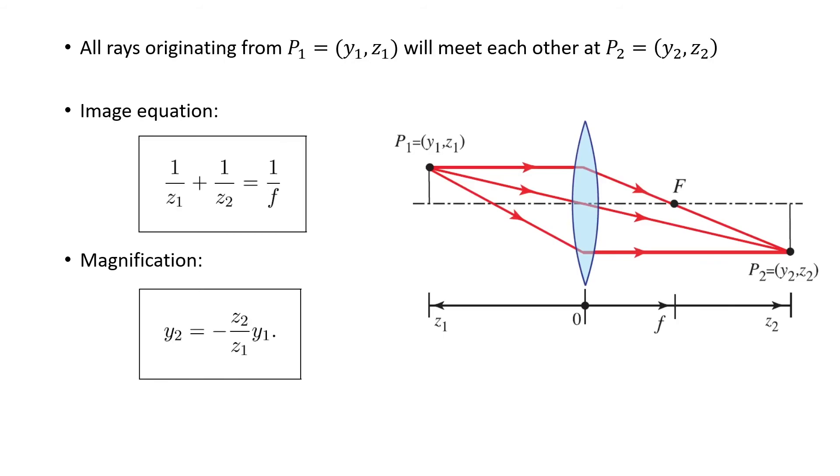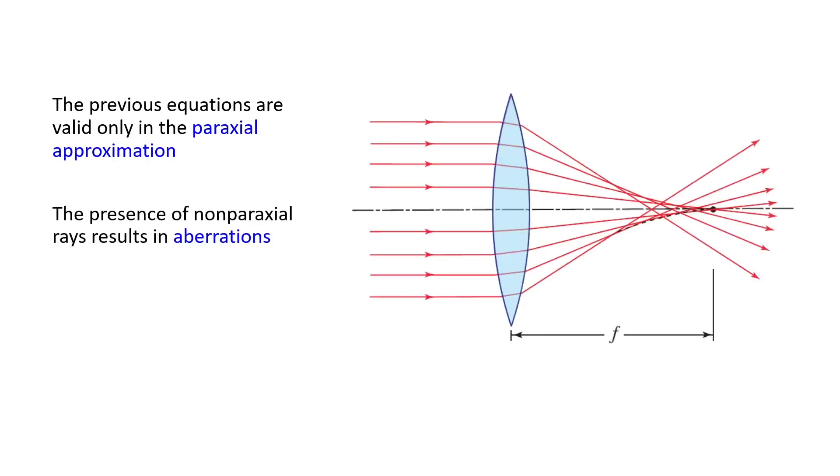The proof of these equations are simple. You can maybe find some of them in the problems. The previous equations we obtained are valid in the paraxial approximation. If we have some rays far from the axis, then we have deviation from the equations we have seen before.